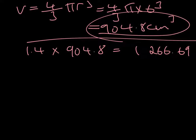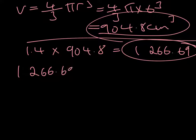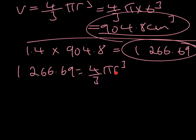So we now know that's the volume of the balloon once it's been increased by 40%, and we're asked to find the radius. We don't know what the radius is, but we can set that volume of 1,266.69 equal to 4/3πr³. Because we've only got one variable here, we can just solve that for r.